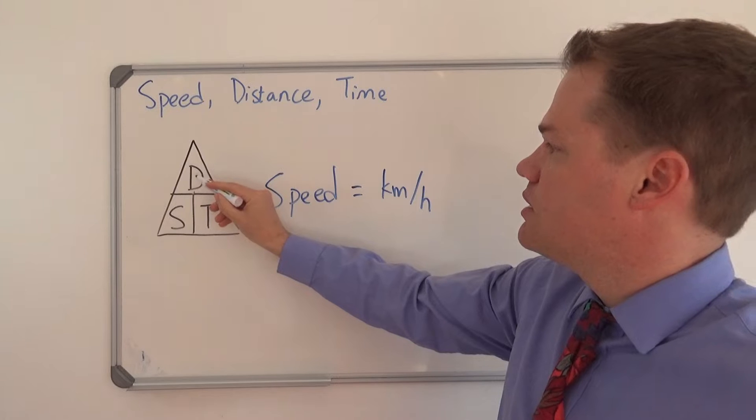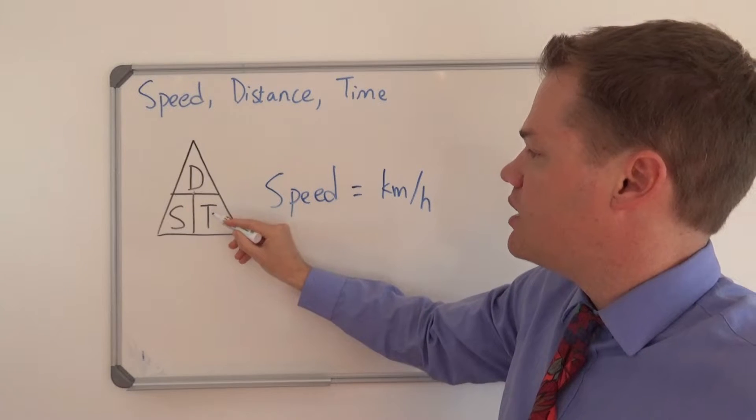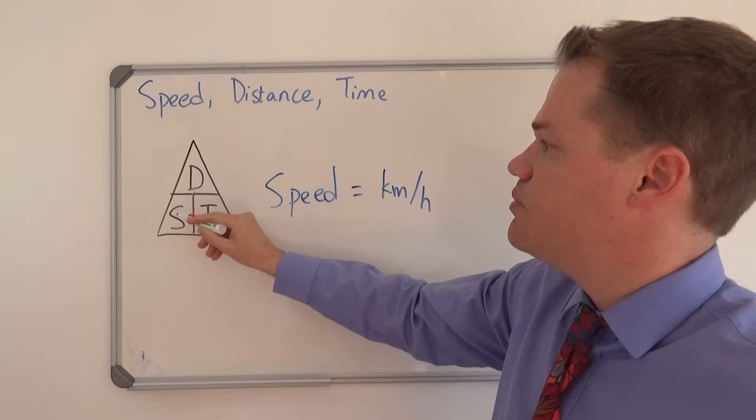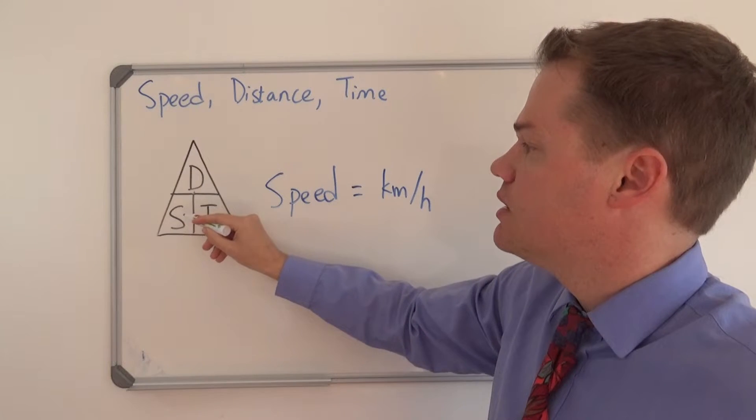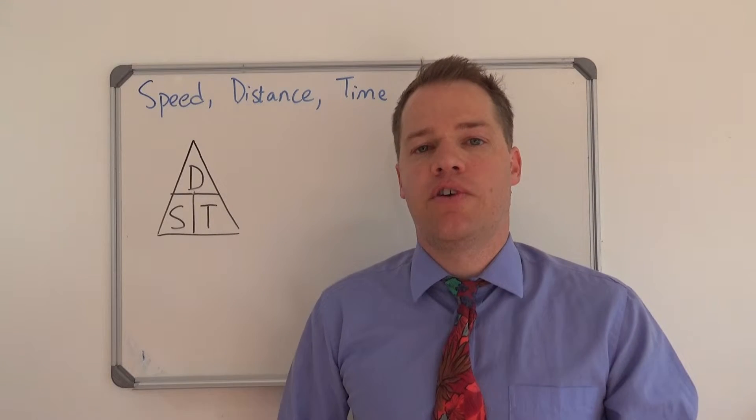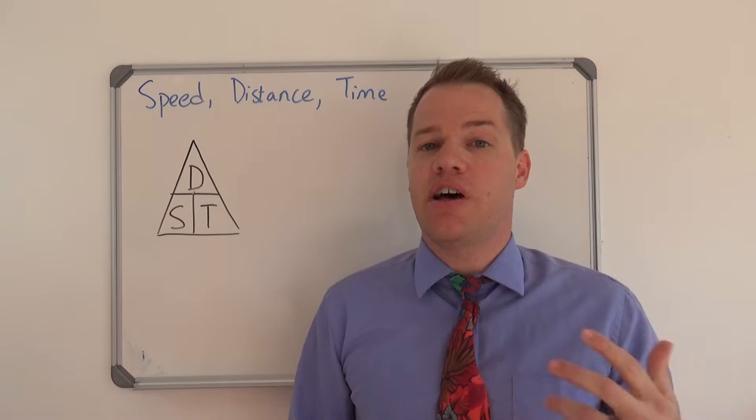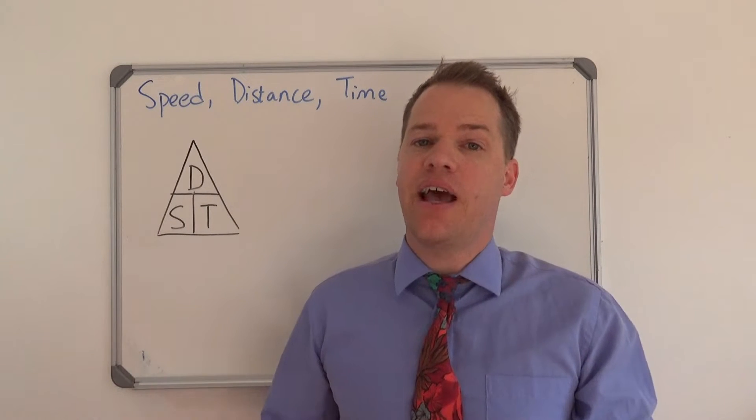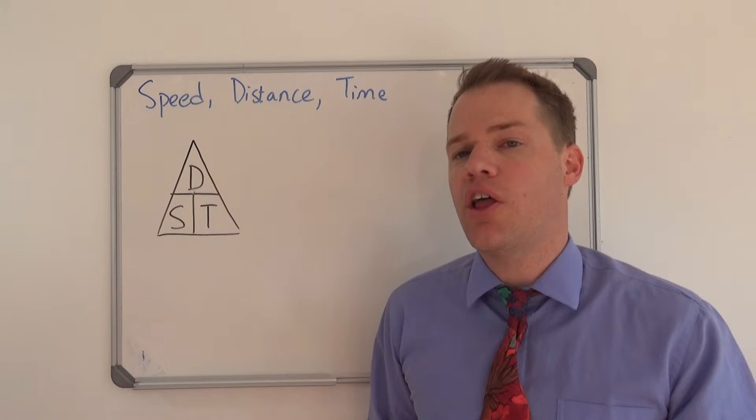Time will be distance divided by speed, and the distance will be speed times the time. So the first example we are going to do is time. How do we calculate time if we have the speed and the distance? Now the distance on the map